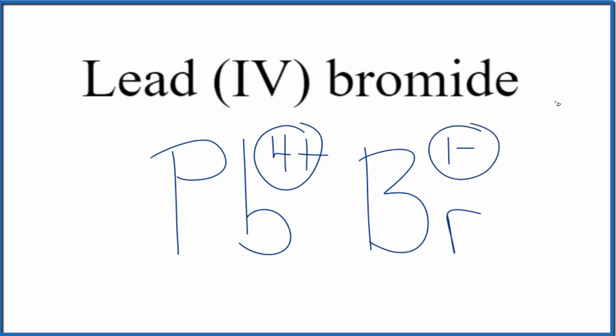Because lead (IV) bromide is neutral, it doesn't say ion after it. These charges here, they need to add up to zero. We need to have a net charge of zero. So if we had four of these bromide ions, 4 times 1-, that's 4-.